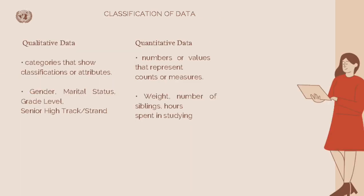Next is classification of data. We have qualitative data and quantitative data. For qualitative data, we have categories that show classification or attributes — for example, gender, marital status, grade level, and senior high track or strand. For quantitative data, we have numbers or values that represent counts or measures, such as weight, number of siblings, and hours spent in studying.